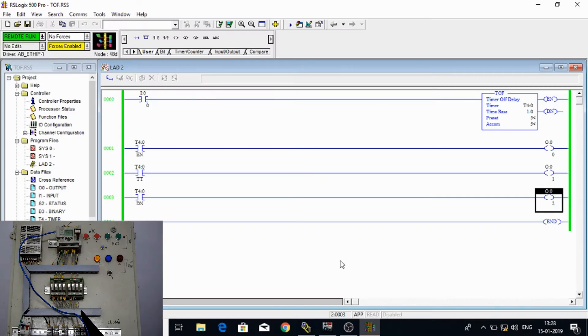So we are discussing here TOF that is timer off delay. So now let's see some practical. In practical here we have taken input and we have got TOF as our timer. And then on enable bit, TT bit and done bit we have taken as input and all three of them we have taken different outputs that are 0, 1 and 2.